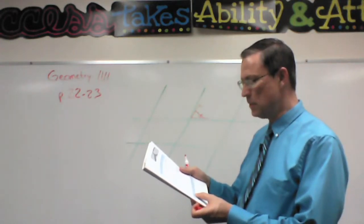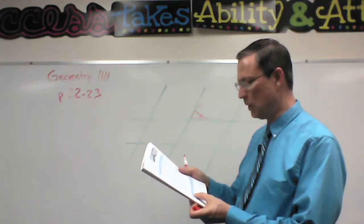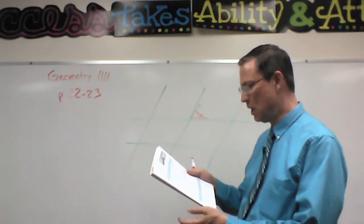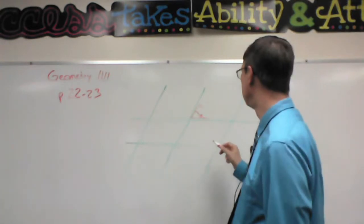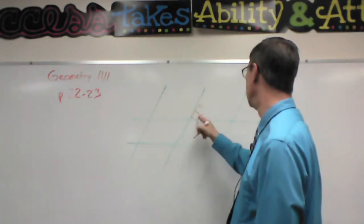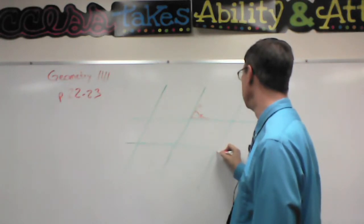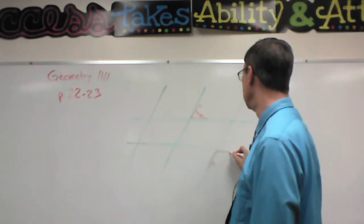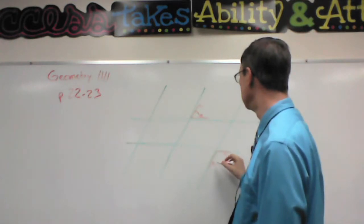If sides of one angle are parallel to the sides of another angle, but in this case the right side to the left side. So down here, I'm going to stand right here and this would be the right side of this angle, this would be the left side.